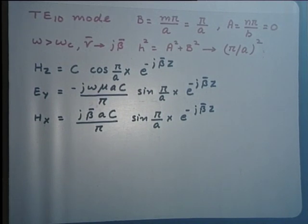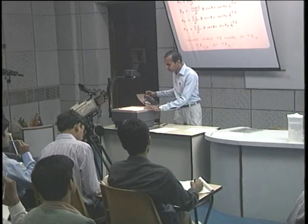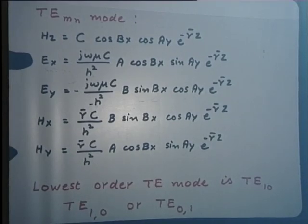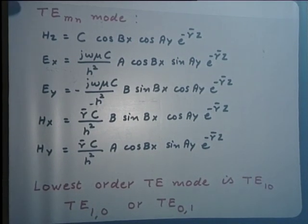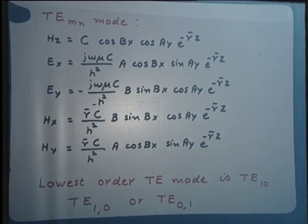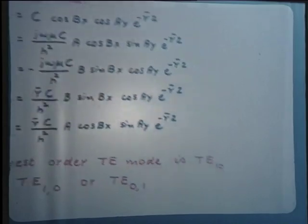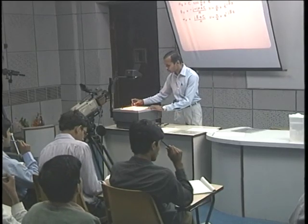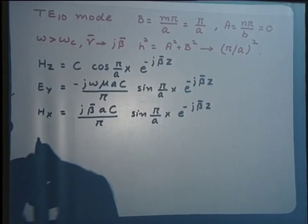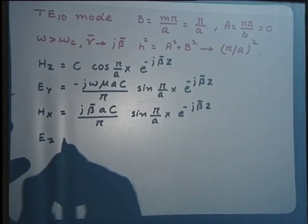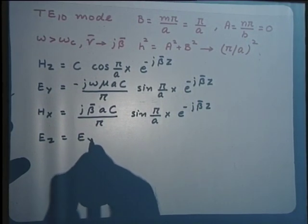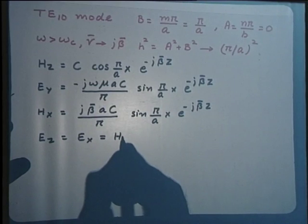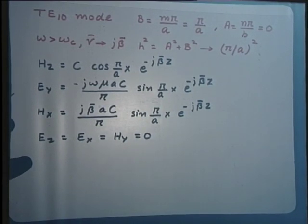These three field expressions are non-zero. As for the other field expressions, E_x and H_y have α as a multiplier, and therefore once α goes to 0 these field expressions become 0. For the TE modes, E_z is 0 by definition — that is the defining condition for transverse electric modes. So E_z, E_x, and H_y are all zero.